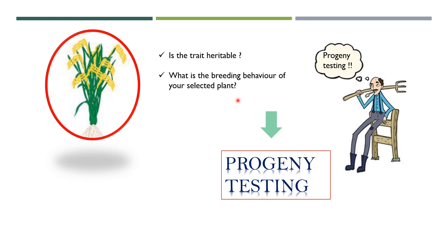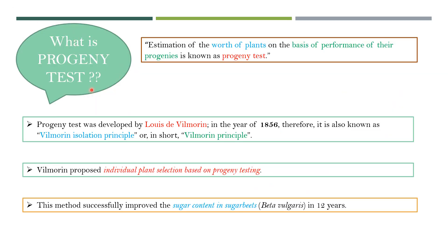That means, is it a homozygous plant or a heterozygous plant? This important information you can get by performing its progeny test. Progeny testing is one kind of selection procedure where you observe the progeny characteristics rather than only depending on the phenotype. The estimation of the real value of a plant on the basis of the performance of its progeny is known as progeny testing. Here, the performance of the progeny serves as the marker character for selection of any plant.